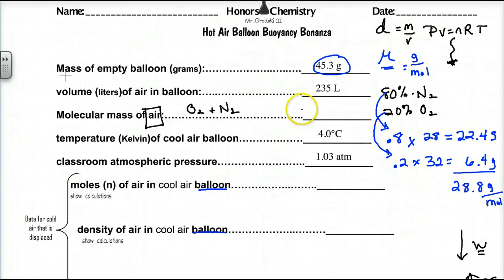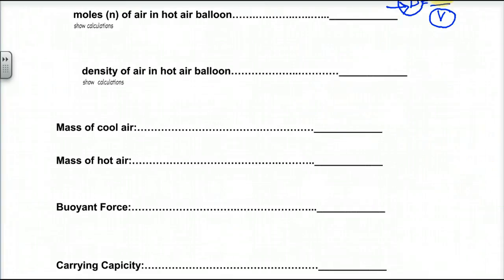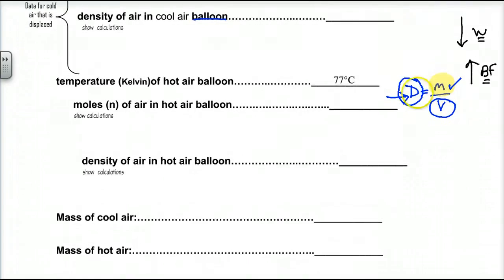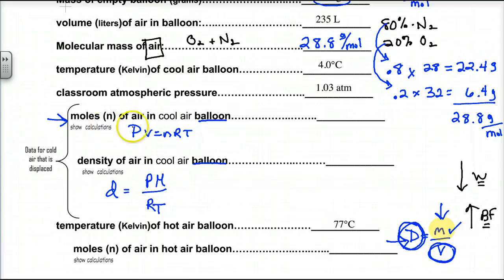Your worksheets will use 28.8 grams per mole — that's constant throughout this lab and on any worksheet I give you. We need molecular mass because density equals PM over RT — that's our equation derived from PV = nRT. Density gets us the mass. We know the volume. Mass is the missing link of this whole lab.